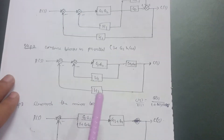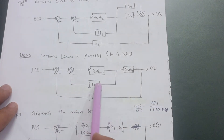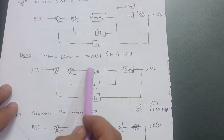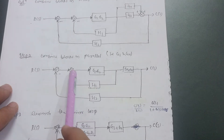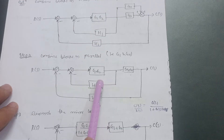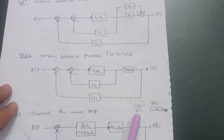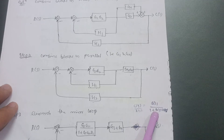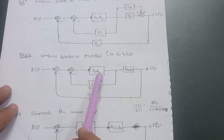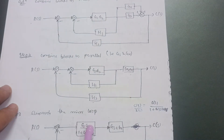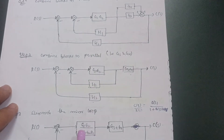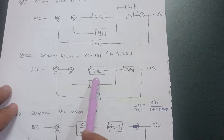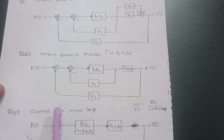Now I am observing the canonical form of the block diagram — one forward path and one feedback path. This is called a minor loop or canonical form. Whenever there is a canonical form, use the transfer function formula: C(s)/R(s) = G(s) / (1 + G(s)H(s)). Here G(s) is G1G2, and H(s) is H1. So eliminating this minor loop gives one box: G1G2 / (1 + G1G2·H1).